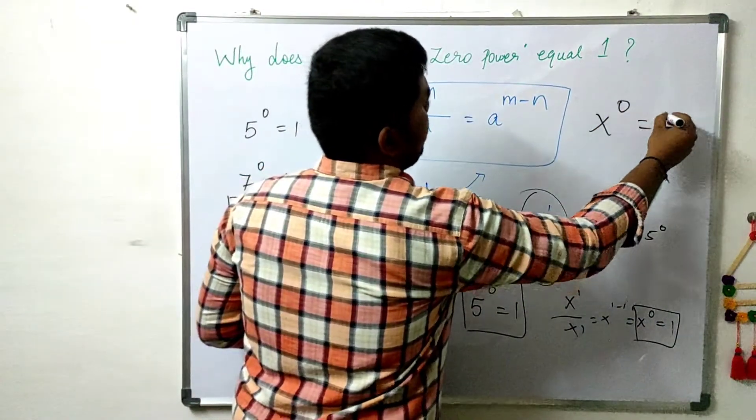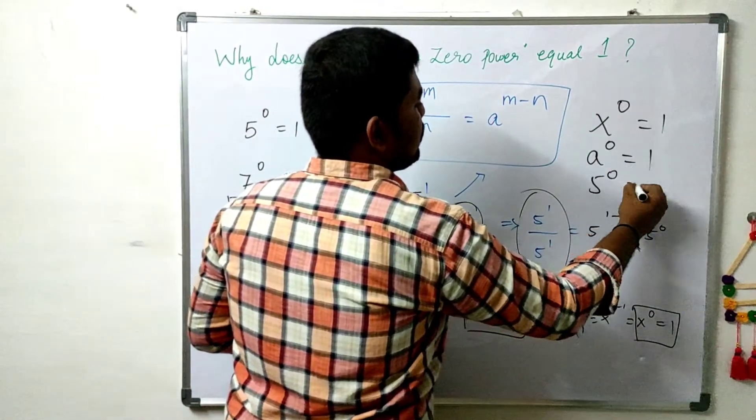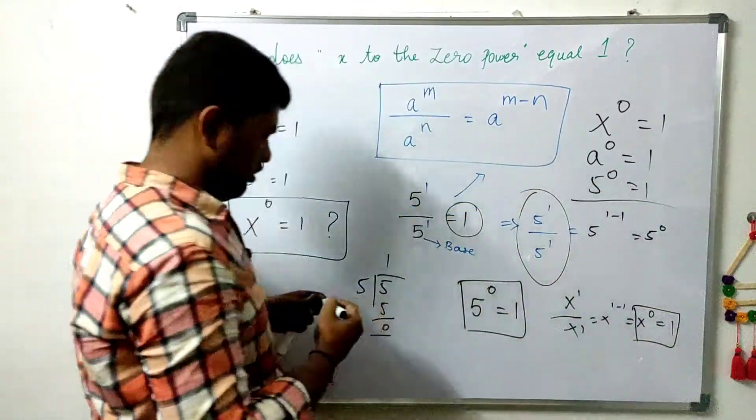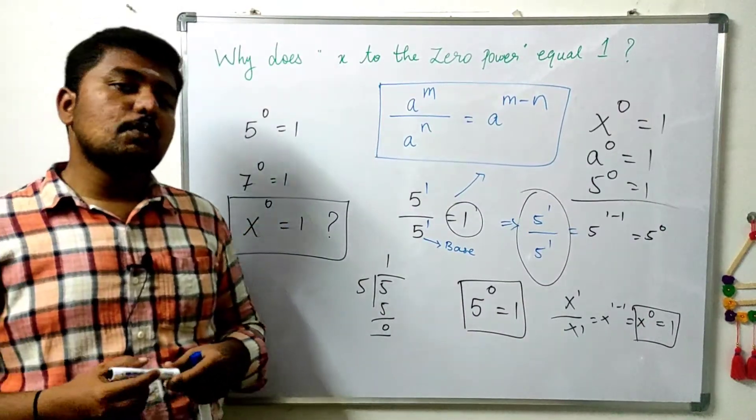x to the power 0 equals 1, or any base power 0 is equal to 1. 5 power 0 is equal to 1, anything else. Very, very simple concept. Either way, in the base, what if 0 was there?